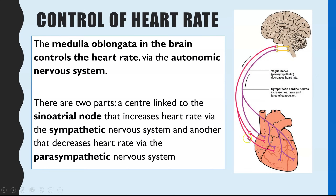There are two different routes depending on whether you want the SAN to release waves of depolarisation more rapidly to increase heart rate, or more slowly to decrease it. The sympathetic nervous system has the effect of increasing heart rate. The parasympathetic nervous system has the opposite effect — impulses sent down it trigger the SAN to release waves of depolarisation more slowly, therefore decreasing heart rate.